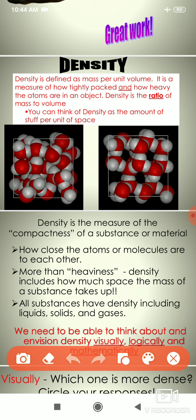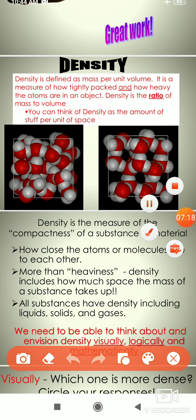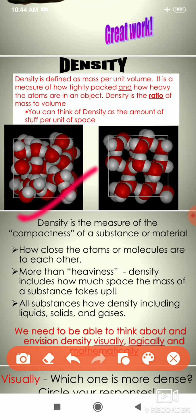Density is defined as mass per unit volume — this is the formula to calculate the density of a substance. The density of a substance always remains the same. It is a measure of how tightly packed and heavy the atoms are in an object.